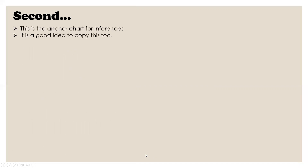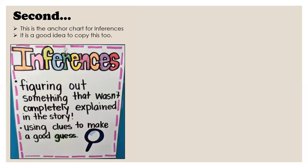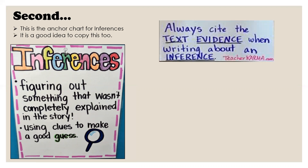This is the anchor chart for inferences — it's a good idea to copy this too. An inference is figuring out something that wasn't completely explained in the story, using clues to make a good guess. So you're just guessing at what's going on. Always cite the text evidence when writing about an inference.